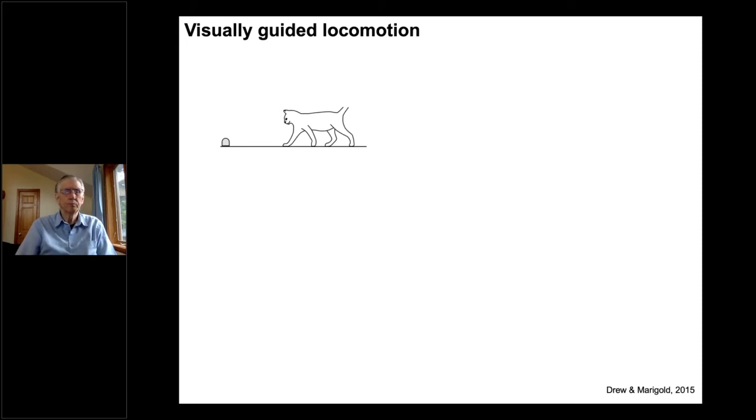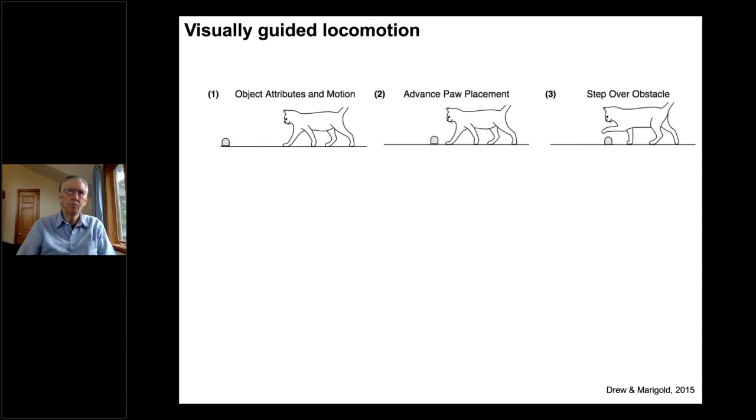So the question is, what do we actually want to learn about neural control of locomotion? Well, as many of the presenters have outlined today, vision is a big part of that. As we're navigating the world, we often encounter things that we need to modify our gait pattern around. In this case, we wanted to go in with a hypothesis about what areas are probably going to show activity. In this case, we relied on some basic science from Drew and Marigold who were studying cats and obstacle avoidance. If you put a cat on a treadmill, have it walk, introduce an obstacle to it, basically it has to see the obstacle and then decide how to place its paws around that obstacle and step over it.